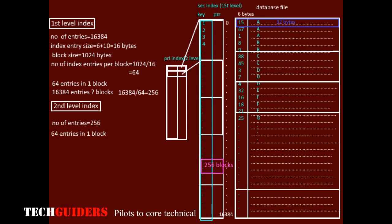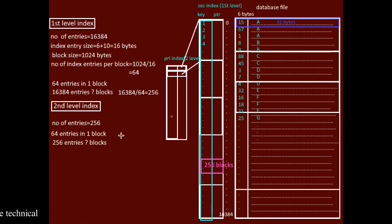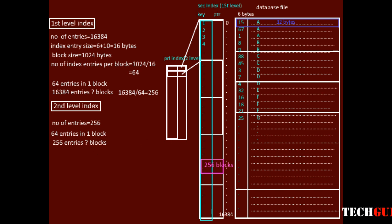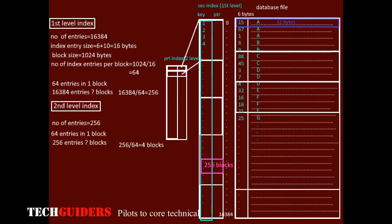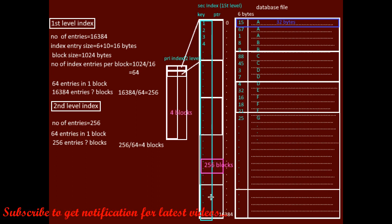Since 64 entries can be kept in a single block, for 256 entries the number of blocks required is 256 ÷ 64 = 4 blocks for the second-level index. Thus, the first-level index requires 256 blocks and the second-level index requires 4 blocks.